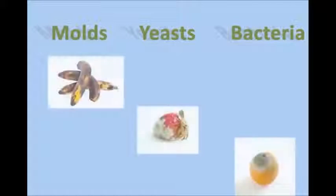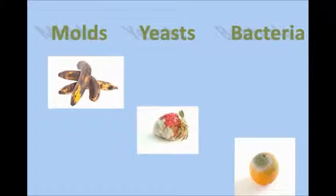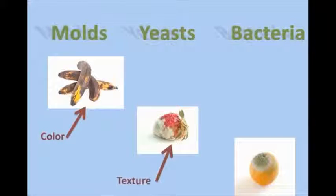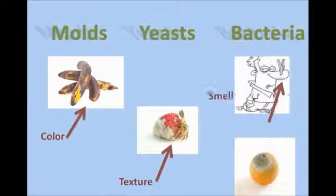Microorganisms such as molds, yeasts, and bacteria are usually the culprits of food spoilage. These organisms find their way into our food and begin to grow and multiply. As they grow, they produce substances that change the color, texture, and odor of the food. Eventually, the food will be changed so much that it is unfit for human consumption.